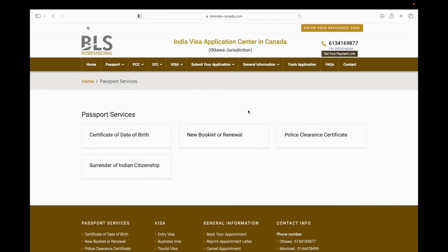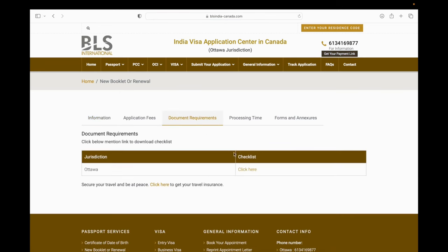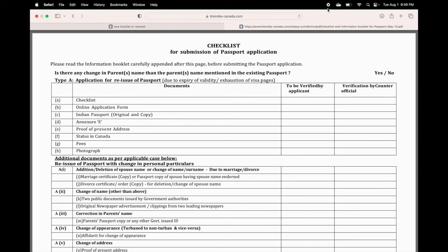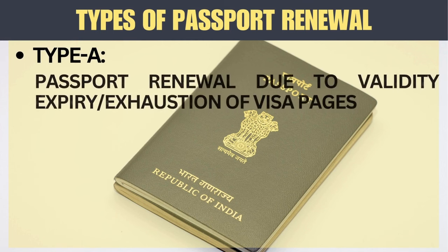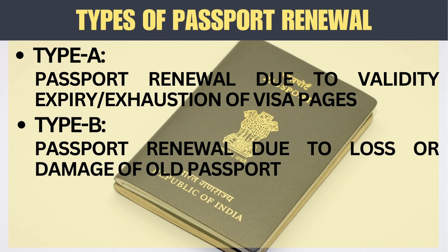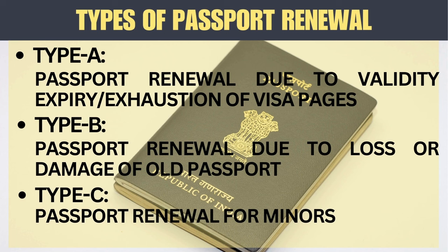Go to the passport tab on the website and choose the option 'New Booklet or Renewal.' Next, click on the documents tab and download the required document checklist. It's important to complete this checklist as it will be submitted along with your application. There are three types of passport renewals: Type A (expiry or full visa pages), Type B (loss or damage), and Type C (minors under 15 years of age).